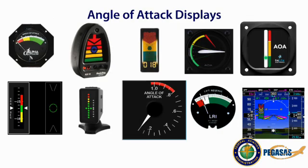Here are several examples of AOA displays. Different manufacturers will have different types of displays. How the AOA functions — i.e., the transducer or pressure system — also varies by installation and manufacturer. The main takeaway is that personal preference and aircraft compatibility are the primary considerations. It is important to familiarize yourself with a variety of angle of attack displays and select the one that suits your needs the best.